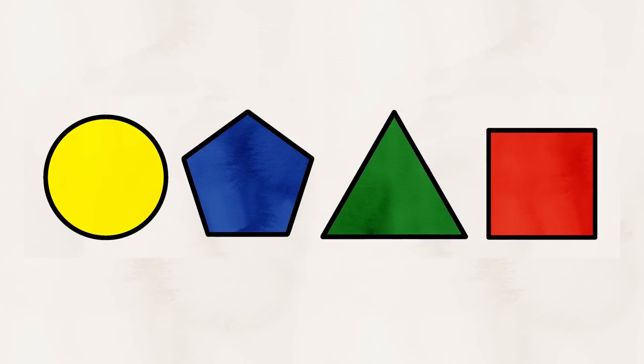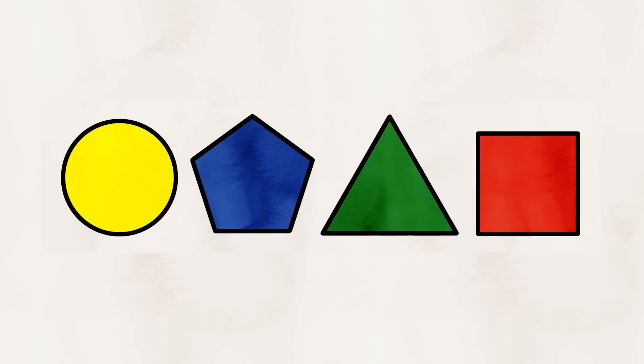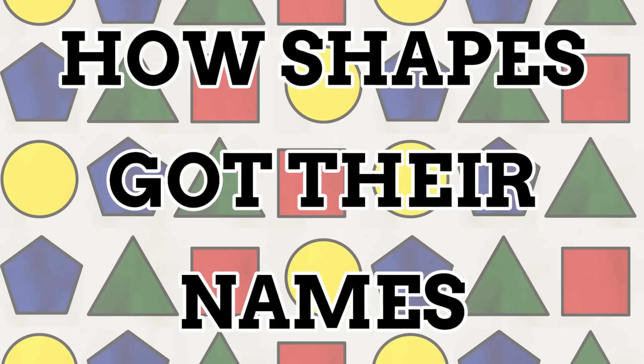Everything is a shape — at least every physical thing is. Shapes are one of those things we were taught about at a really young age at school, from simple ones as little kids to all kinds of triangles in maths class when we get older. Yet despite how much we're taught about shapes, we don't really talk about their names. I never remember being taught why a circle is called that, or why four-sided shapes have so many different names. So why don't we look into how shapes got their names? For this video I'm just looking into 2D shapes — 3D shapes are way above my pay grade.